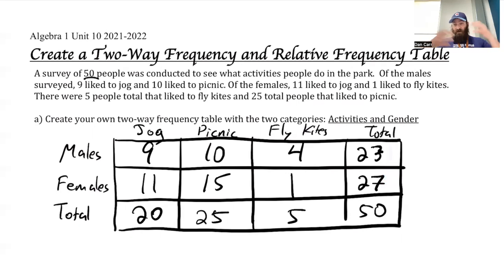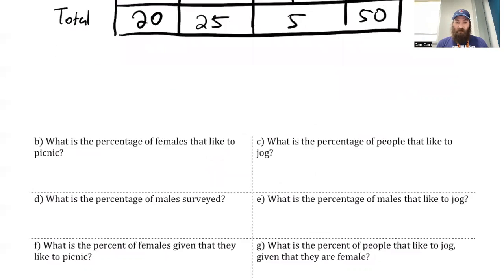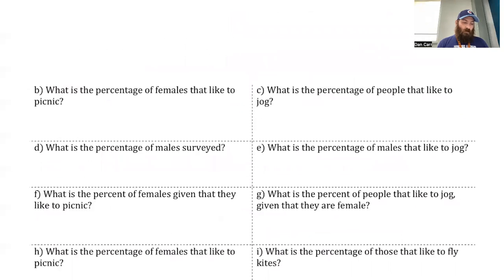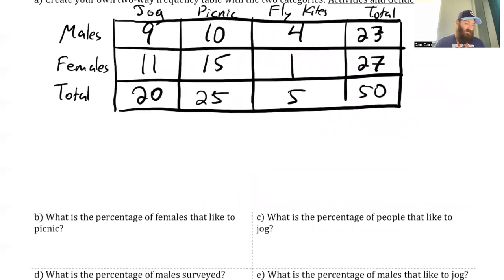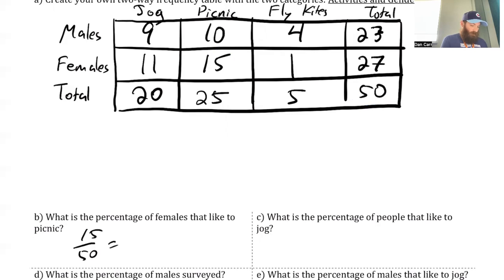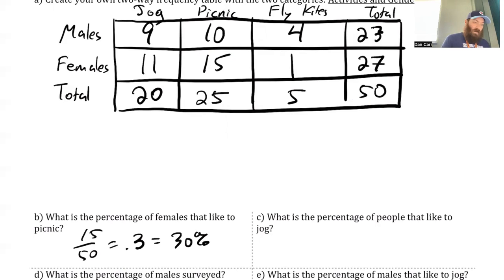We are given some incomplete information, but we can fill in using just our numbers that have to add up. Now I have enough information to answer these follow-up questions. What is the percentage of females that like to picnic? I'm going to say that's out of the total — so females that like to picnic is 15 females out of 50, and that's going to come out to 0.3, which is 30%.